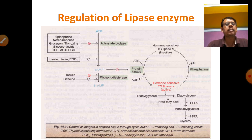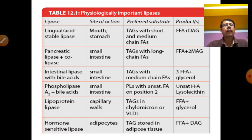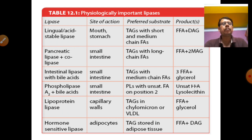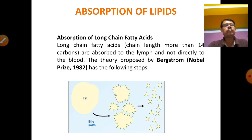Caffeine can increase cyclic AMP and produce lipolysis, while insulin increases phosphodiesterase activity and decreases lipolysis. In summary, lipases act at different sites: in the mouth producing one fatty acid with diglycerol, in the stomach producing fatty acid with diglycerol, in the small intestine producing fatty acids with monoglycerol, and at small intestine capillary walls ultimately producing fatty acids and glycerol. Long-chain fatty acids with more than 14 carbon atoms are not directly absorbed into the blood.